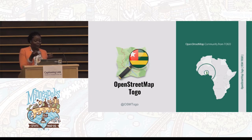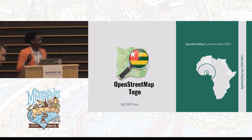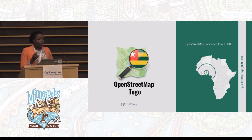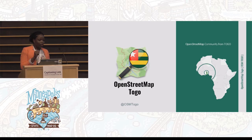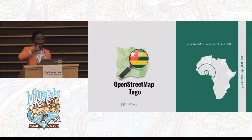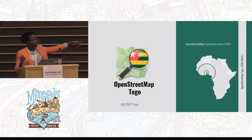I will do my presentation in English, and after, there is someone who can translate. I'm a member of OpenStreetMap of the Togo community. Togo is a country in the West of Africa. If you want to see our activity, we can go on Twitter.